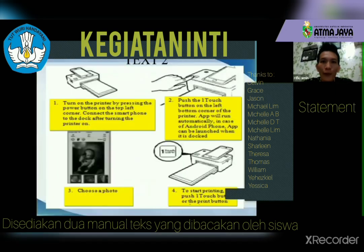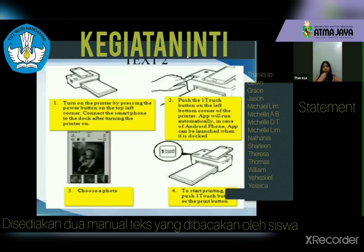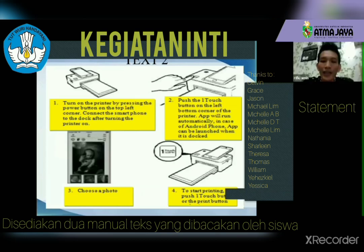Now I want Teresa to help me read Text Two. 'Number one: Turn on the printer by pressing the power button on the top left corner. Connect the smartphone to the dock after turning the printer on. Number two: Push the one-touch button on the left corner of the printer. The app will run automatically; in the case of an Android phone, the app can be launched when it is done. Number three: Choose a photo. Number four: To start printing, push the one-touch button or the print button.' Good, Teresa. Thank you.